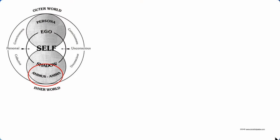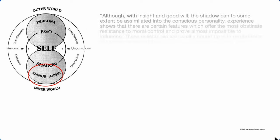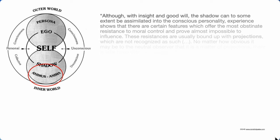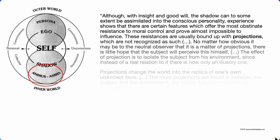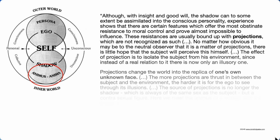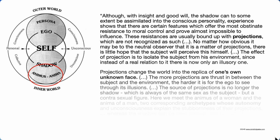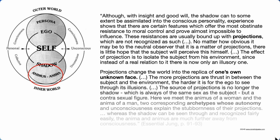Although with insight and goodwill the shadow can, to some extent, be assimilated into the conscious personality, there are certain features which offer the most obstinate resistance — these are usually bound up with projections which are not recognized as such. The effect of projection is to isolate the subject from his environment, since instead of a real relation to it, there is now only an illusory one. Projections change the world into the replica of one's own unknown face. The more projections are thrust in between the subject and the environment, the harder it is for the ego to see through its illusions.